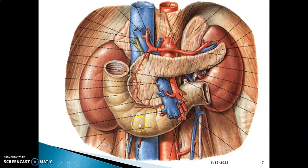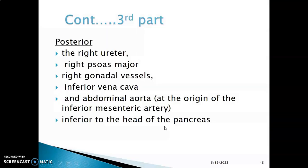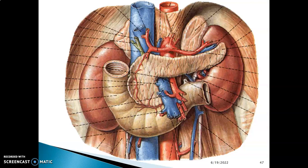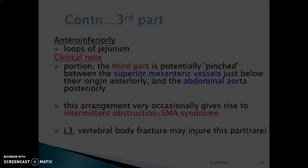Posterior to the third part of the duodenum, you have the inferior vena cava, the aorta, and their branches and tributaries. The posterior wall structures include the right ureter, right psoas major muscle, right gonadal vessels — either right testicular or right ovarian vessels — the inferior vena cava, and the abdominal aorta at the origin of the inferior mesenteric artery. The head of the pancreas is also related. The ovarian and testicular arteries from the aorta are posterior relations, and inferiorly you have loops of the small intestine.